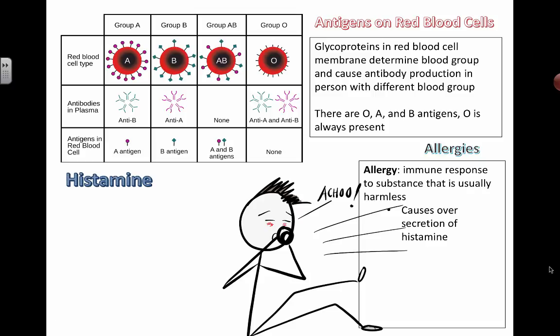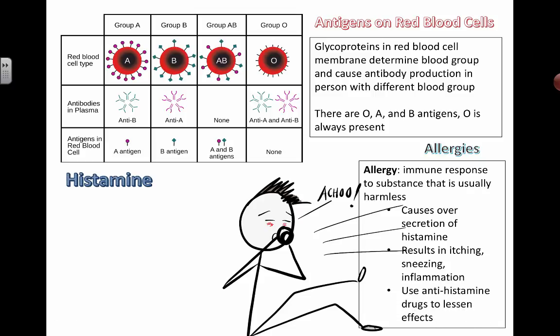People wear masks to protect themselves from pollen, not just from sick people on trains. Allergy is defined as an immune response to a substance that is usually harmless, and it causes the over-secretion of a substance called histamine. You know it as itchy eyes, sneezing, and inflammation — it can get really bad for a lot of people. You can take drugs that block this histamine response. The main thing people suffer from is actually their own body's reaction to harmless substances.